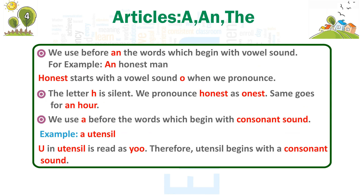We use AN before words which begin with a vowel sound. For example, 'an honest man' — honest starts with the vowel sound O when pronounced; the letter H is silent, so we pronounce it as 'onest'. Same goes for 'an R'. We use A before words which begin with a consonant sound. Example: a utensil — U in utensil is read as 'Yu', therefore utensil begins with the consonant sound 'Yu'.